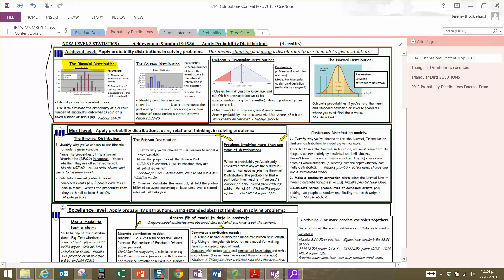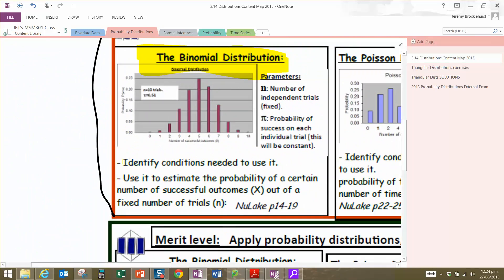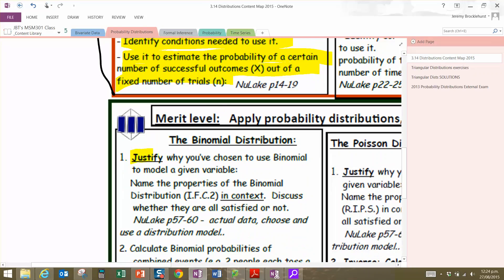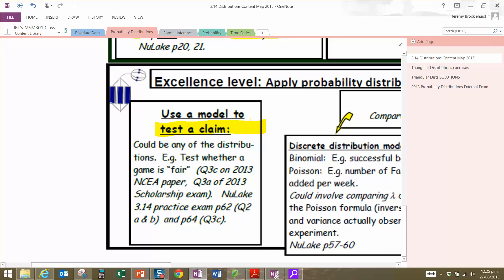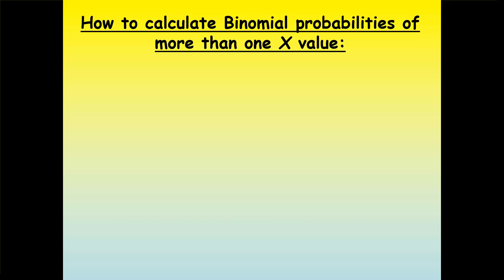At achieve level we need to be able to identify the conditions needed to use binomial distribution, use it to estimate probabilities of a certain number of successful outcomes out of a fixed number of trials. At merit level we need to justify why we've chosen binomial to model a given variable, name its properties in context and discuss whether they're satisfied. This video is focused at achieve level, looking at how to calculate binomial probabilities of more than one x value.